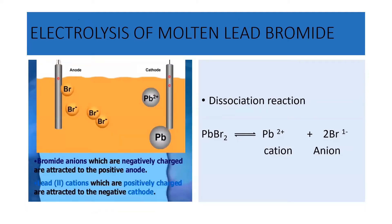During this process, how does lead bromide dissociate? Lead bromide dissociates into Pb2+ and Br-. Pb2+, being a cation, will always move towards the cathode. Br-, being an anion, will move towards the anode.